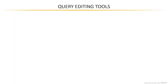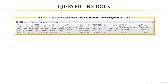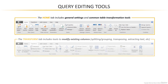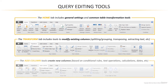Moving on into the query editing tools, there are three primary tabs. First, the Home tab includes general settings, data source settings, parameters, table properties, and the most common table transformation tools. The Transform tab includes additional tools to modify existing columns — you can split or group columns, transpose your table, extract text, and more. Finally, the Add Column tab lets you create brand new columns in your table, defined by conditional rules, text operations, calculations, date operators, and so on.